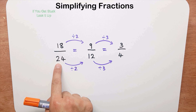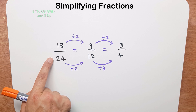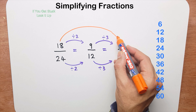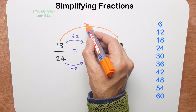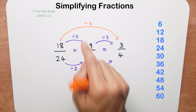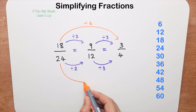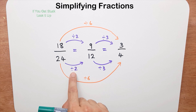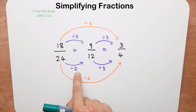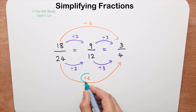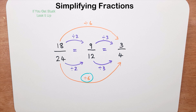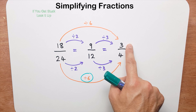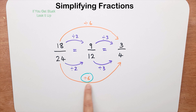Now as before, if I know that 18 and 24 are both in the 6 times table, I can divide 18 by 6 and divide 24 by 6 as well. Make a note of this: instead of doing it in two steps — dividing by 2 and then dividing by 3 — we can do it in one step by dividing by 6. So 18 divided by 6 is 3 and 24 divided by 6 is 4.